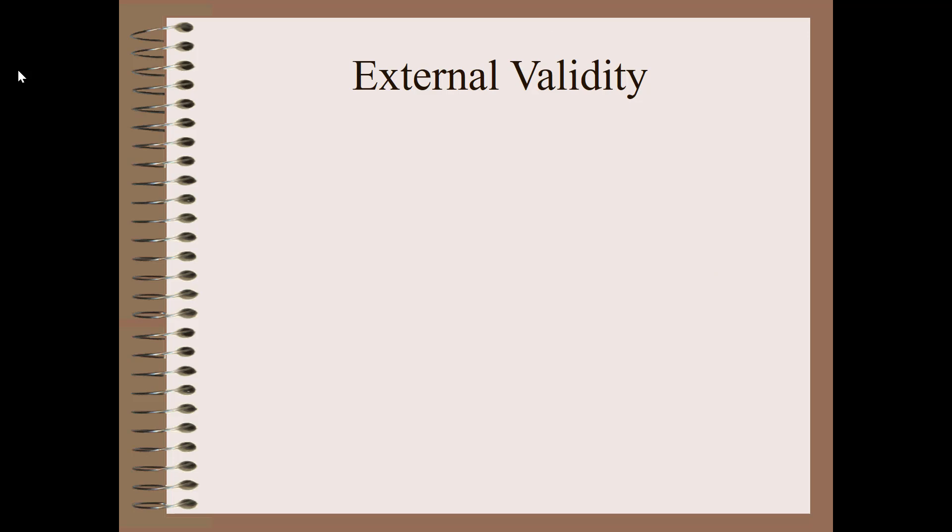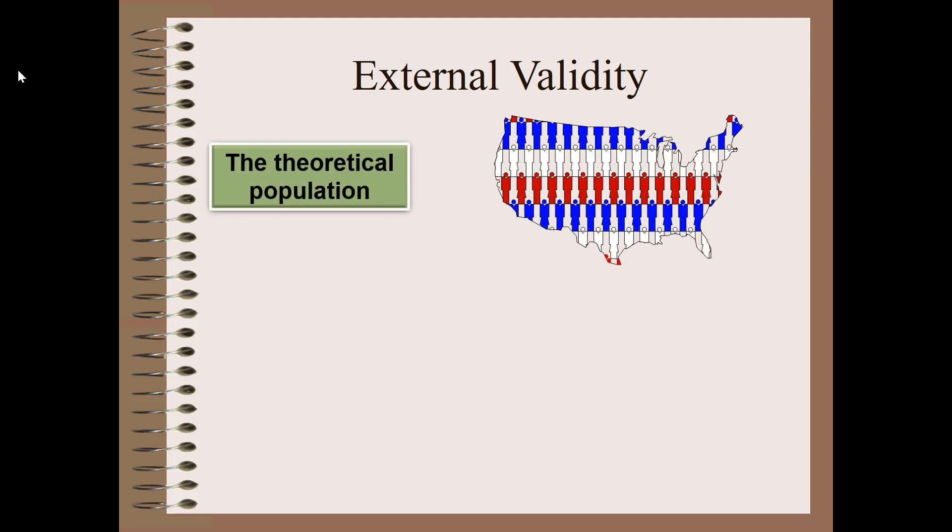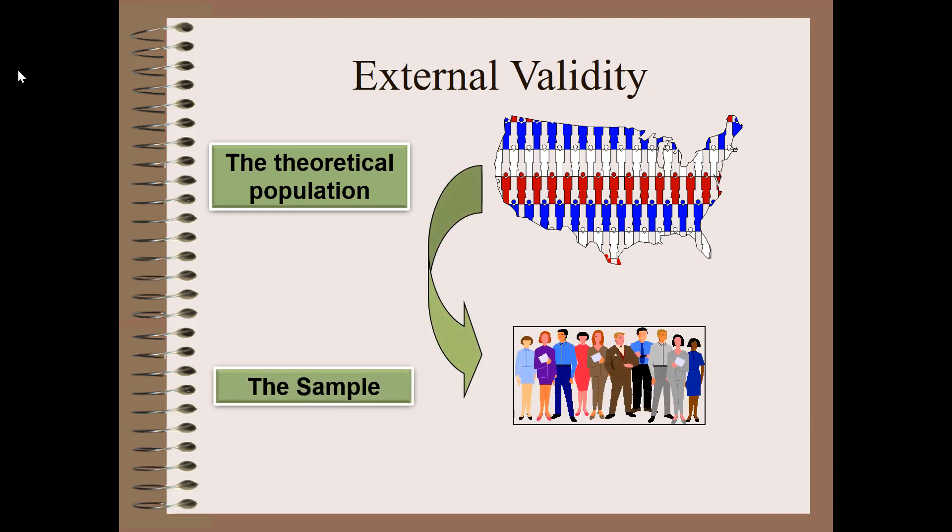The reason this process is important is because of this term here, external validity. Let me backtrack a little bit. We have this theoretical population that we're interested in and from that we go through some process to get our actual sample. There's a sampling process involved and at the end of the day we have our sample.